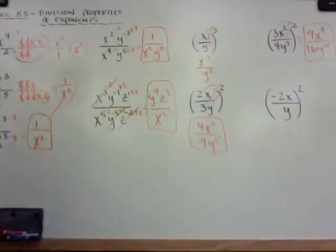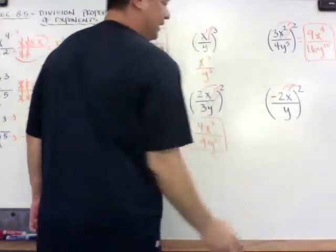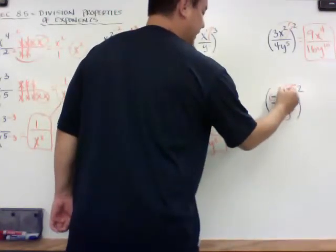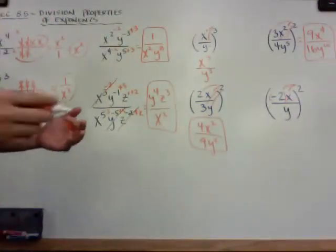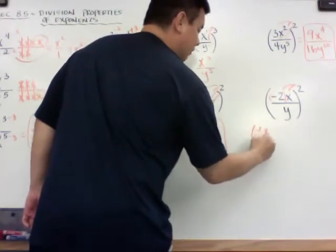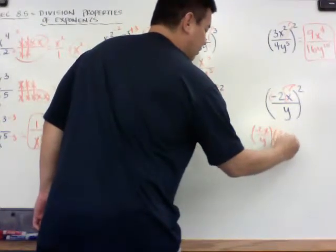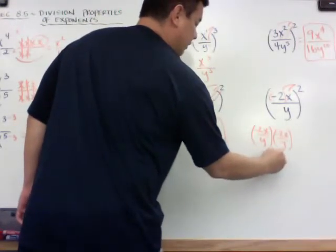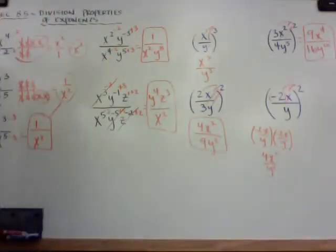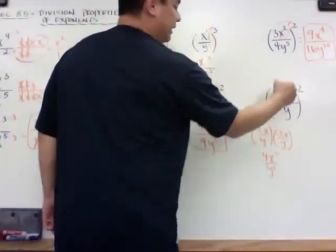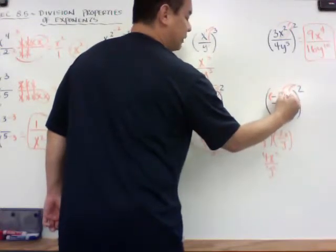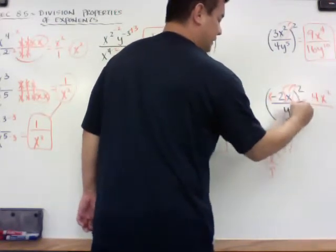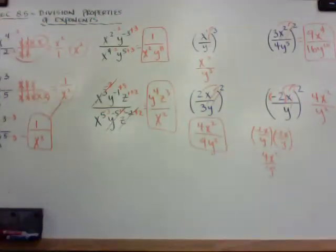Here's a tricky one. If I distribute this 2 into the negative 2 and x, I want to make sure if there's a negative in here, I put parentheses around the negative 2. The reason why is if I wrote this out the long way, because it's squared, I could say negative 2x over y times negative 2x over y. Negative 2 times negative 2 becomes 4x squared over y squared — so it becomes a positive 4. So when I distribute this 2 in and there's a negative inside the parentheses, make sure you put the parentheses here. So it's negative 2 in parentheses squared, which gives 4x squared over y squared.